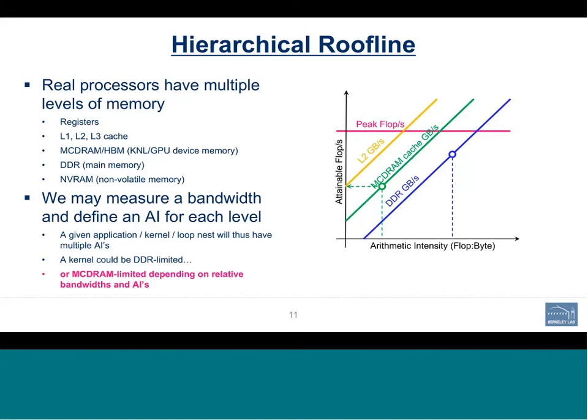A follow-up question: does the flop-per-byte ratio change between memory levels? The numerator — the number of flops — remains the same for the underlying kernel, but the denominator changes. There is a certain number of bytes moved from DDR and a different number moved from MCDRAM. So you have one flop-per-byte ratio associated with MCDRAM and another associated with DDR.